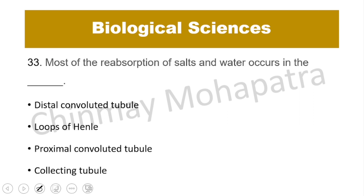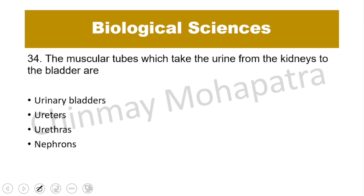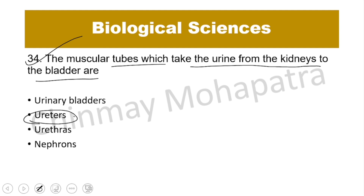Question number 33: Most of the reabsorption of salt and water occurs in the proximal convoluted tubule. The muscular tubes that take urine from the kidney to the bladder are the ureters. Urine passes from kidney to urinary bladder through the ureter, and from the bladder out through the urethra.